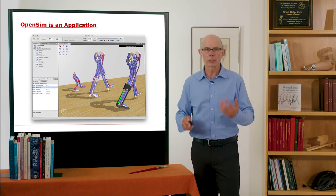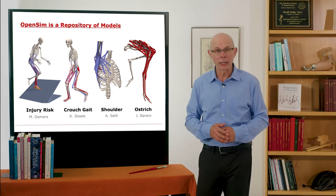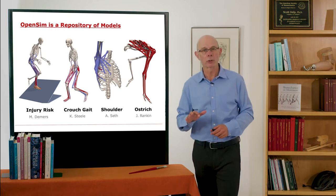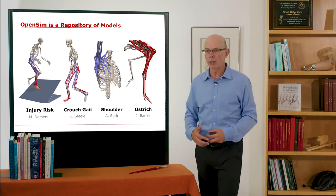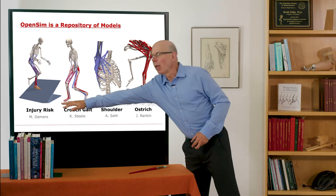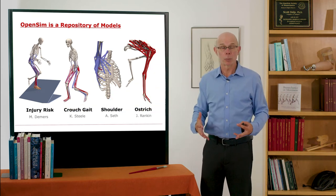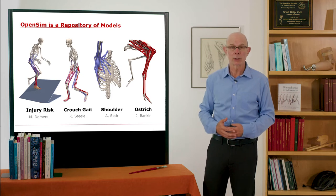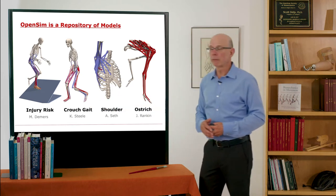One thing that's valuable is it's a repository of models. There's an OpenSim community that has contributed models—for example, landing on an inclined plane and your risk of spraining your ankle or tearing the ligaments in your ankle when you do that. There are simulations done of crouch gait, for example, a really nice detailed model of the shoulder.